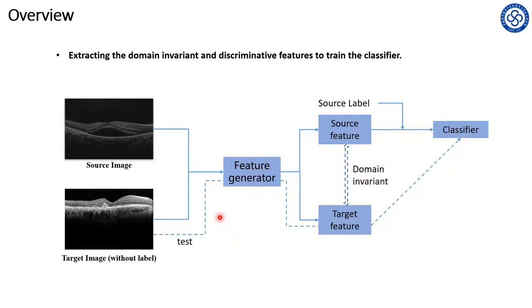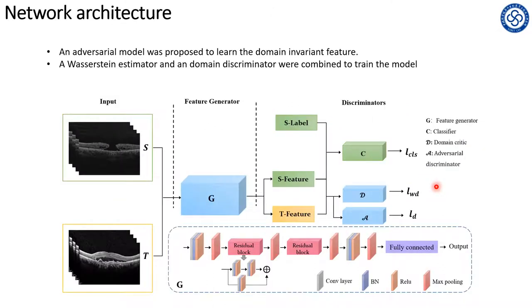When testing, the target images were sent to the feature generator first and then the target features were classified by the classifier. This is the detailed network architecture consisted of a generator, two discriminators, and a classifier.